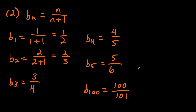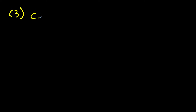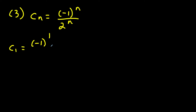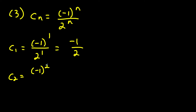Now let's look at another question where we find the first five terms and the hundredth term. This time we have c sub n equals negative one to the n over two to the n. This is a special type called an alternating sequence. For n equals one, we get negative one over two. For n equals two, negative one squared over two squared gives positive one over four — the sign switches from negative to positive and back to negative, going on forever.